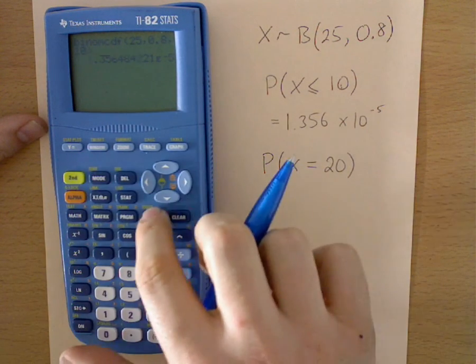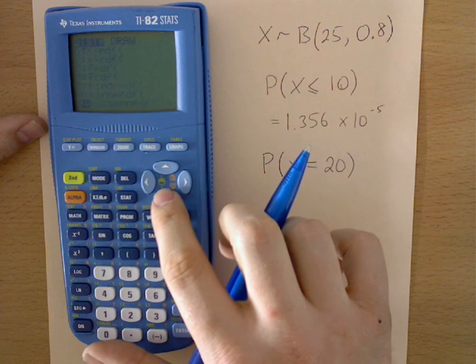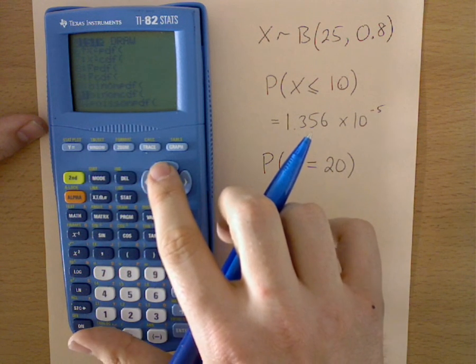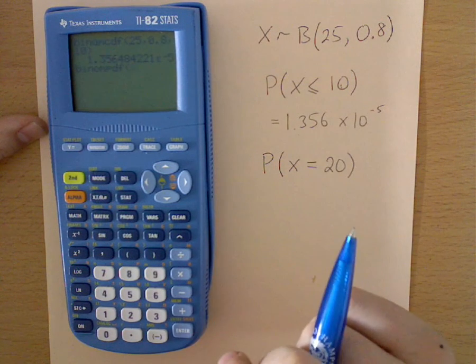So we go back into the distribution, and back down to where we found the binomial CDF, but up above that is binomial PDF. Press enter.